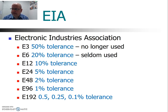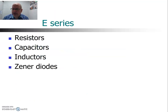This preferred number series is called the E-series, and it is used for resistors. E3 was an early series, no longer used. E6 is used for 20% tolerance resistors, and you don't see that as often as you once did. More common today are the 10% tolerance resistors, called the E12 series. There's also an E24 for 5% and so on. These E-series values are also used for capacitors, inductors, and zener diodes.